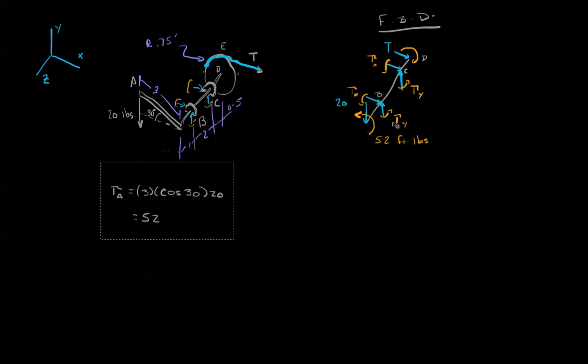We notice that at B and C we have a torque in the X and the Y direction. Let's sum the torques in the Z direction. If we sum the torques in the Z direction it becomes really easy. We see that the torque here is 52 foot pounds and the torque here is unknown and the sum of them must be zero.